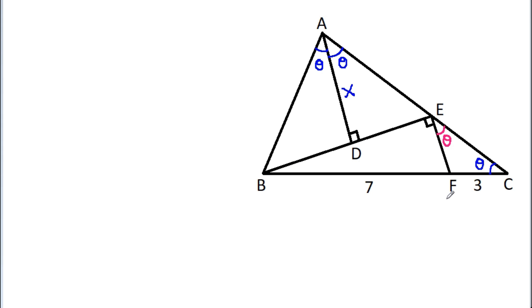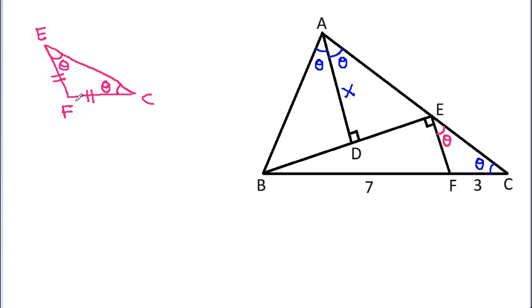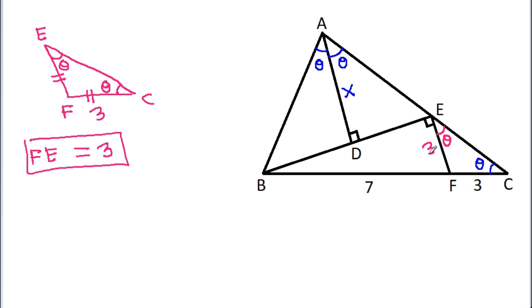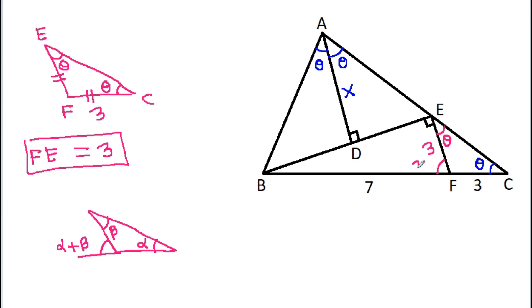And now, in triangle FEC, these two angles are equal, so FC will be equal to FE. And FC is 3, so FE will also be equal to 3. And by the exterior angle theorem, if one angle is alpha and another is beta, then the exterior angle will be alpha plus beta. So here, this angle will be theta plus theta, that will be 2 theta.